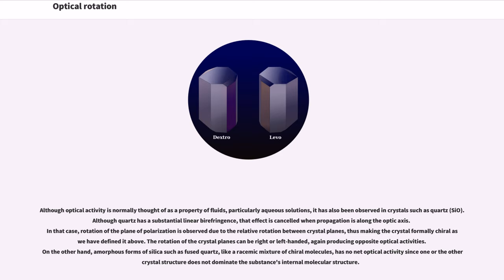Although optical activity is normally thought of as a property of fluids, particularly aqueous solutions, it has also been observed in crystals such as quartz. Although quartz has a substantial linear birefringence, that effect is cancelled when propagation is along the optic axis. In that case, rotation of the plane of polarization is observed due to the relative rotation between crystal planes, thus making the crystal formally chiral as we have defined it above. The rotation of the crystal planes can be right or left-handed, again producing opposite optical activities. On the other hand, amorphous forms of silica such as fused quartz, like a racemic mixture of chiral molecules, has no net optical activity since one or the other crystal structure does not dominate the substance's internal molecular structure.